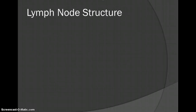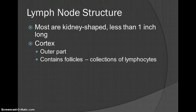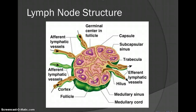What does your lymph node look like? It reminds me a lot of the kidney and the adrenal glands. They are kidney-shaped, less than an inch long. There's a cortex — the outer part that contains follicles, which are a whole bunch of lymphocytes — and the inner part that has those macrophages. So you have your medulla and your cortex.